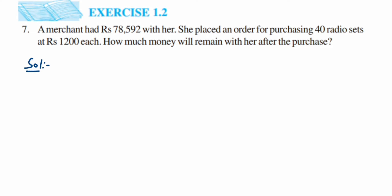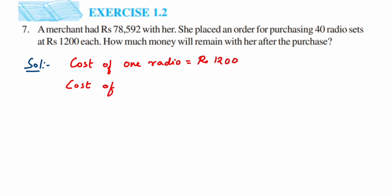Let's start with the solution. Cost of one radio is equal to rupees 1200. If one radio is 1200, then the cost of 40 radios will be 1200 multiplied by 40.